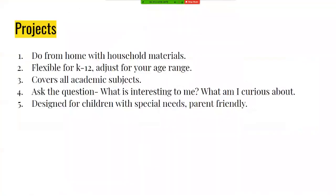What are we going to do with process art and Jackson Pollock? Our projects are simple — five little steps. We do them from home using household materials. They're flexible for kindergarten through 12th grade and we adjust for age range. They cover all academic subjects and ask you a question: what's interesting to me and what am I curious about? These are designed for children with special needs and they're also parent friendly.